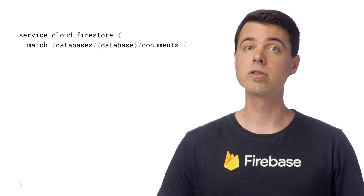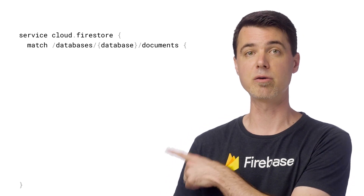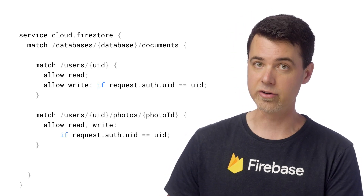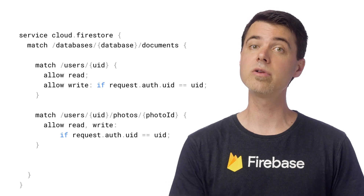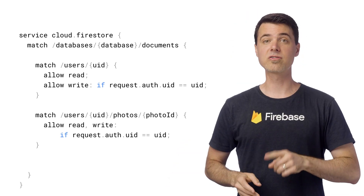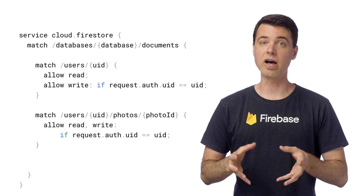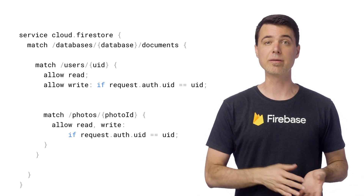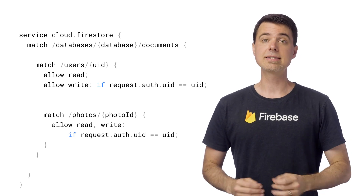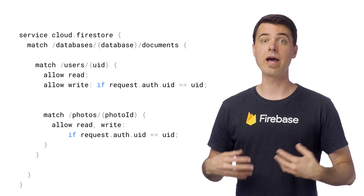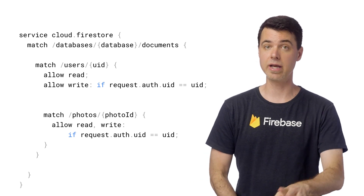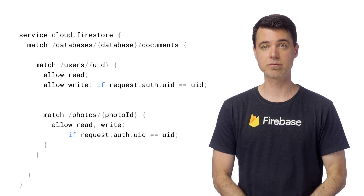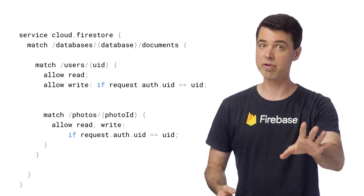If you recall before, the boilerplate for Firestore security rules has a top-level match for all the documents in your database, and all your document rules get nested underneath it. Sometimes doing your own nesting can save you some typing. Since the photos sub-collection is effectively nested under documents in the users collection, we can nest the match for photo documents inside the match for users, like this. See how the prefix of users and the wildcard UID are now implied by the outer match. And you can also use the UID variable from the outer match just fine in the inner match. Of course, this nesting is optional, but you might prefer it.